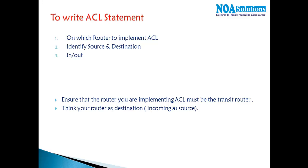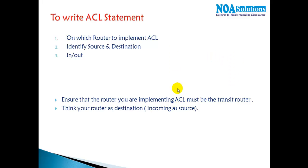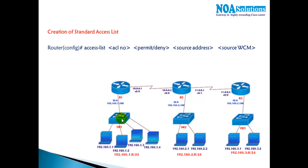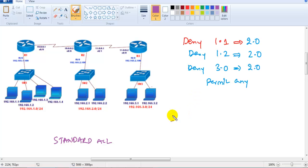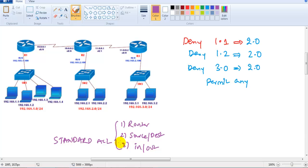Whenever you write any ACL statement, there are three important things to understand. First, on which router to implement. Second, who is the source and who is the destination. Third, in which direction to implement. If you understand these three things you can write ACL rules for any given scenario.